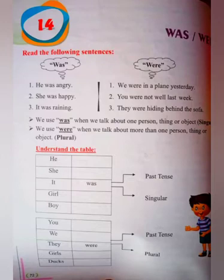He was angry. She was happy. It was raining. We were in the plane yesterday. You were not well last week. They were hiding behind the sofa. We use 'was' when we talk about one person, thing, or object — that is, singular.